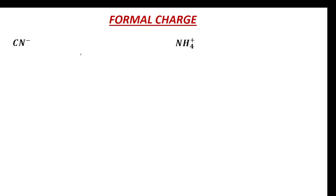Today we will practice calculation of formal charge for these molecules: CN⁻ and NH₄⁺. Let's draw the structure of CN⁻. So C triple bond N, with one lone pair of electrons on the nitrogen atom and one lone pair of electrons on the carbon atom.